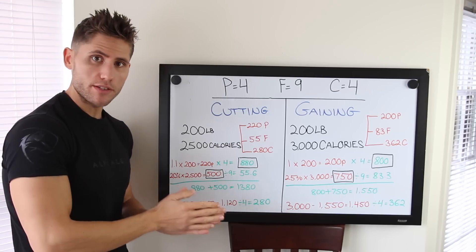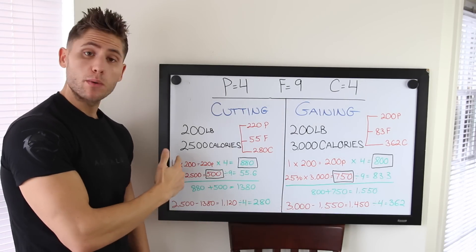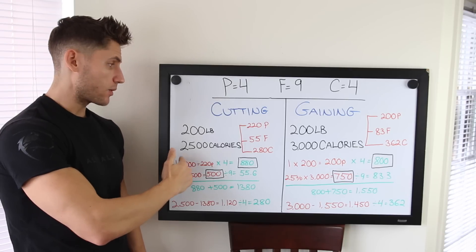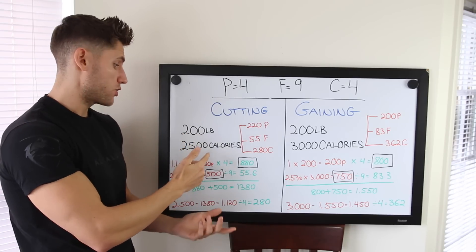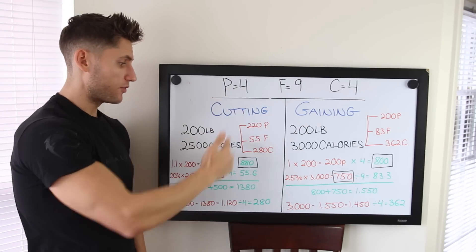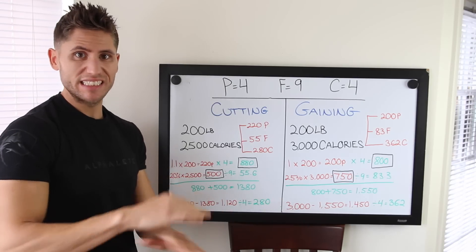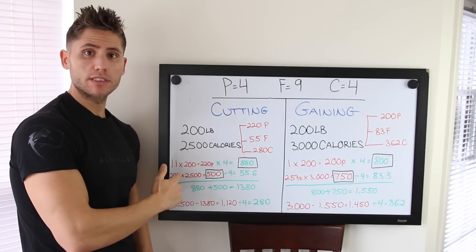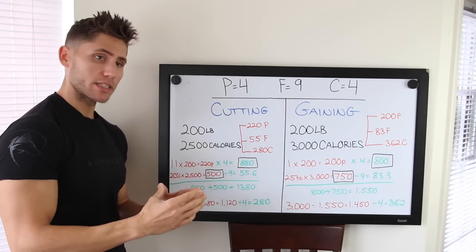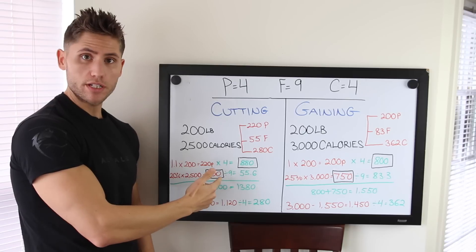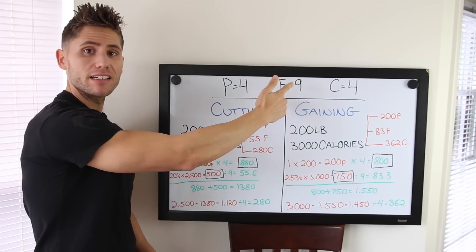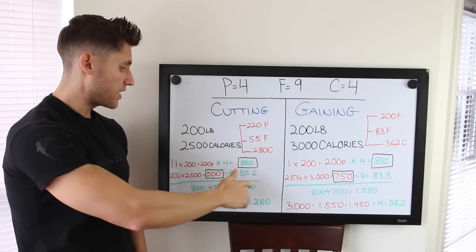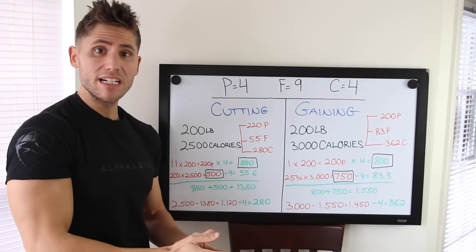We break that down into macronutrients. We set protein first — going towards the lower end at 1.1 grams per pound. So 1.1 times 200 pounds equals 220 grams of protein per day. Multiply that by 4 and that's 880 calories from protein. Next we move on to fat intake — going with 20 percent of total calories. So 20 percent of 2,500 is 500 calories. Divide that by 9 calories per gram and we get 55.6 grams of fat per day.